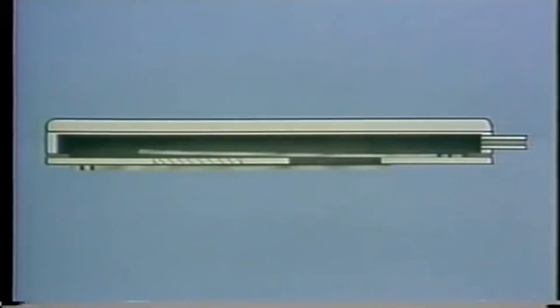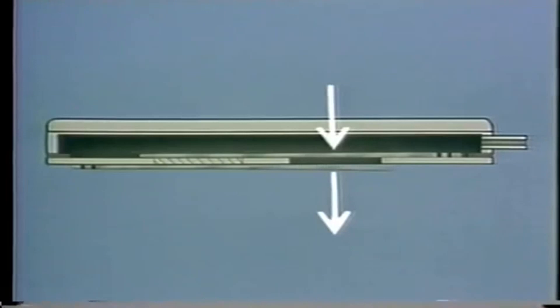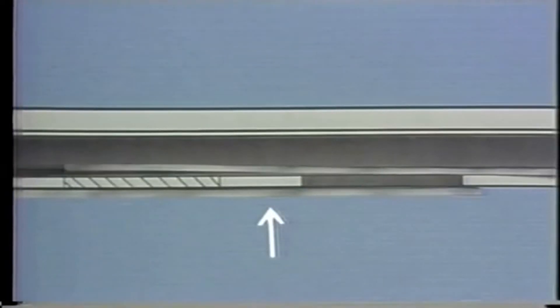On a downstroke, the pressure differential across the valve causes external air pressure to push open the lower feather, allowing air into the cylinder while holding the upper feather shut. On an upstroke, the pressure in the cylinder shuts the lower feather and pushes the upper feather open.